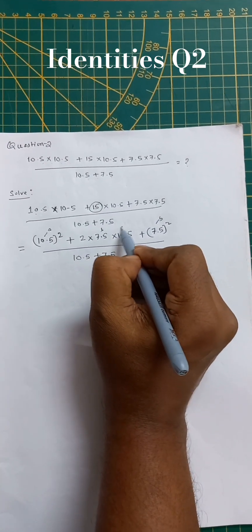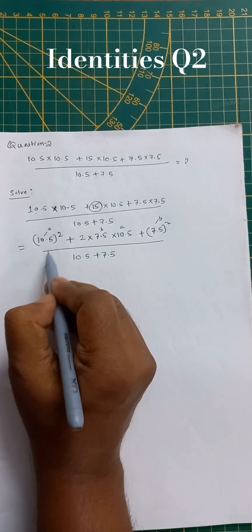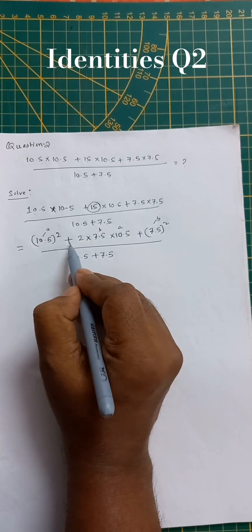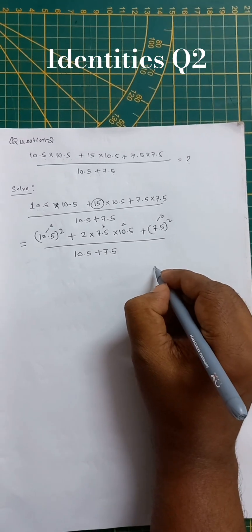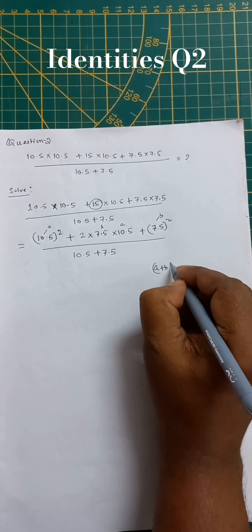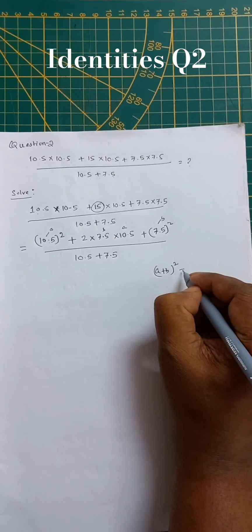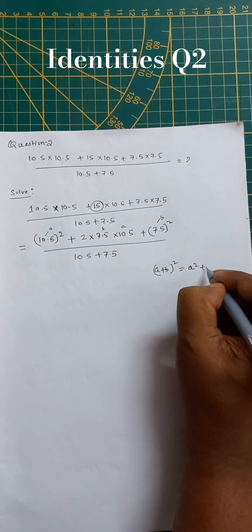So here you can see that a square plus 2ab plus b square. So we need to use a formula for it: a plus b whole square equal to a square plus 2ab plus b square.